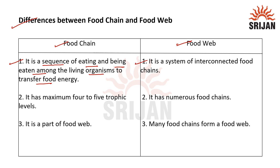When we talk about food web, it is a system of interconnected food chains. A food chain can have a maximum of four to five trophic levels, but a food web is made up of many food chains. Food chain is a part of food web, whereas food web is made up of many food chains coming together.